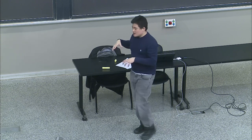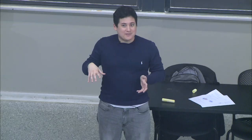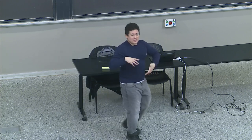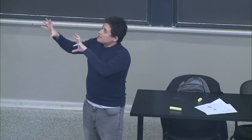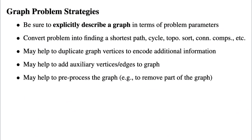I always suggest when you see a word problem, try to state cleanly an abstract problem — that if you knew the answer to that abstract problem, you could easily solve your word problem. That decouples the complexity of the word problem. If you can map it to a graph with certain properties and solve an abstract problem on that graph, you don't have to worry about the strange context details. Converting your problem into finding a shortest path, or finding a cycle, or finding a topological sort, connected components, or a negative weight cycle can make it easier to think about.